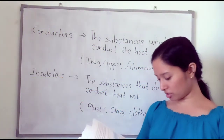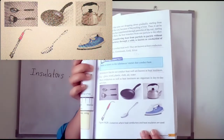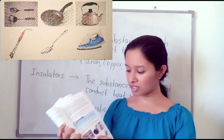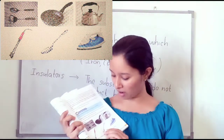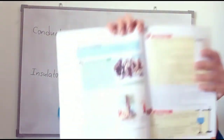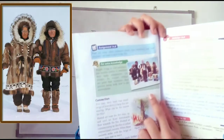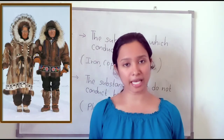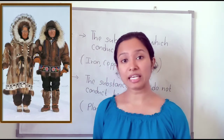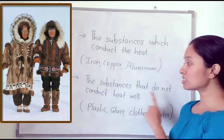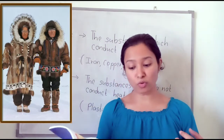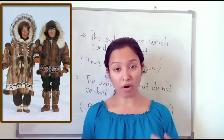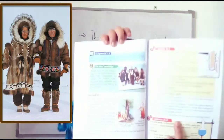On page 51, there are pictures showing examples of conductors and insulators. For instance, some people are wearing woolen clothes. They wear woolen clothes to maintain their body temperature because woolen cloth is a good heat insulator — it does not conduct heat well. So wearing woolen clothes prevents body heat from escaping to the environment.